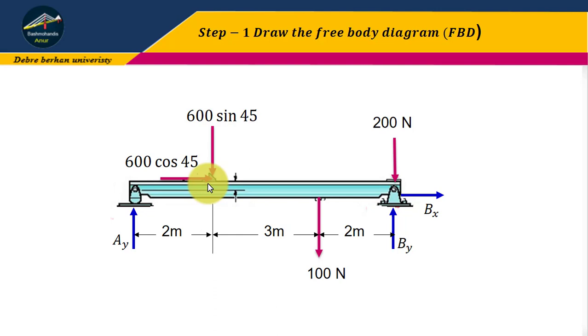For the 600 Newton inclined force, we have to resolve it into the X and Y components. The Y component is 600 sin 45 degrees and the X component is 600 cos 45 degrees.